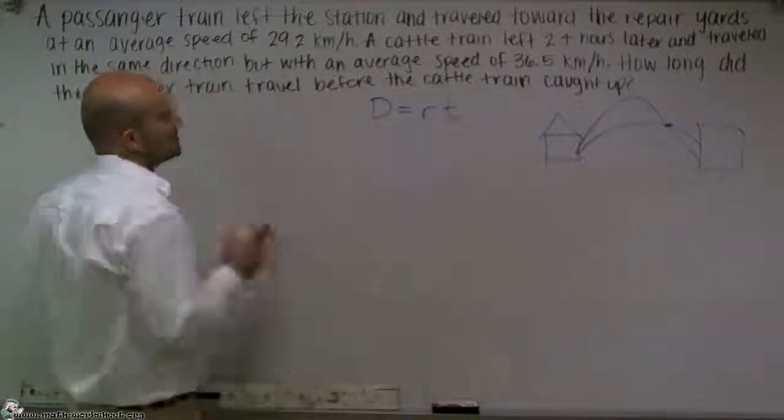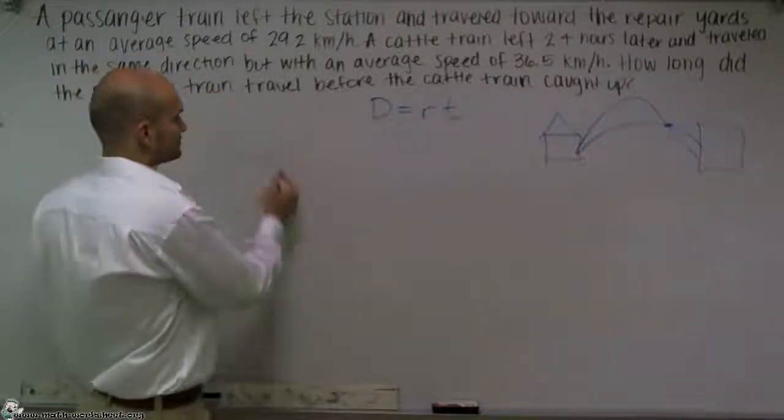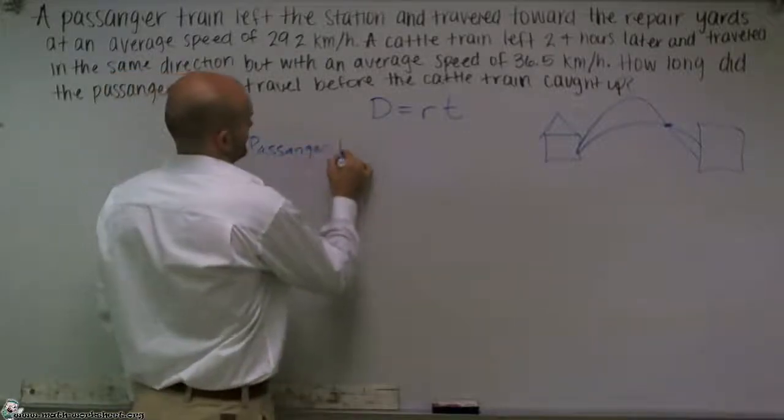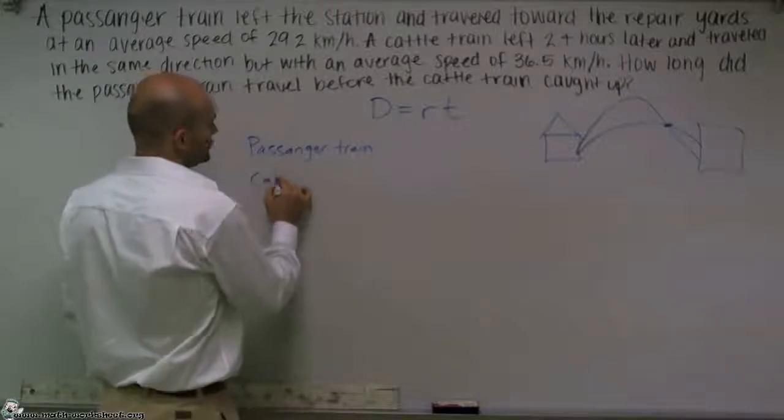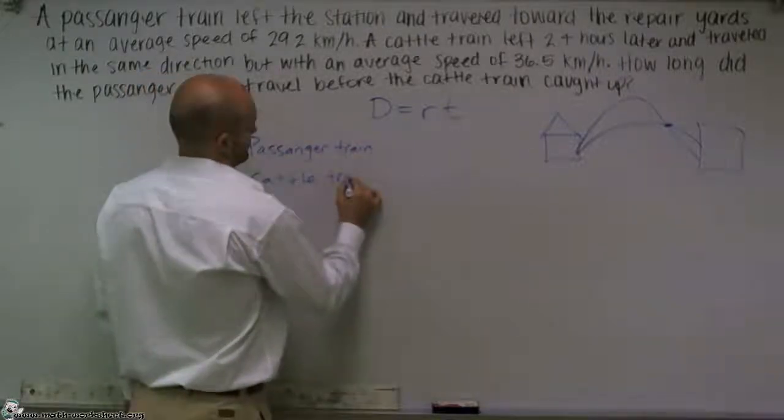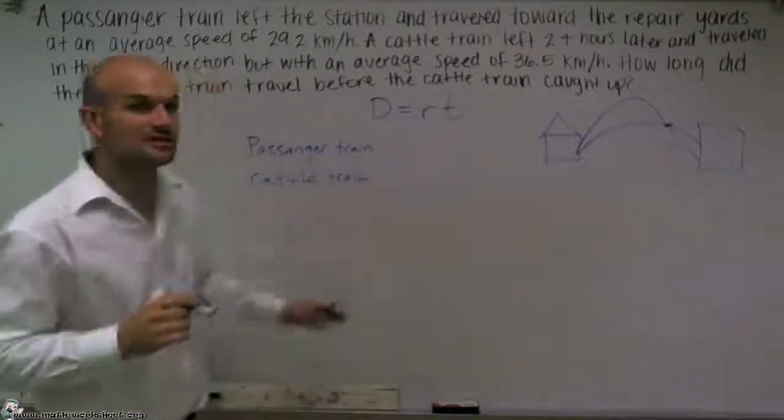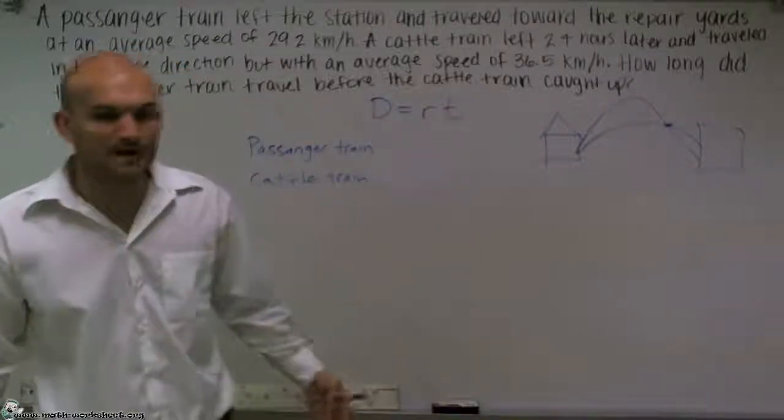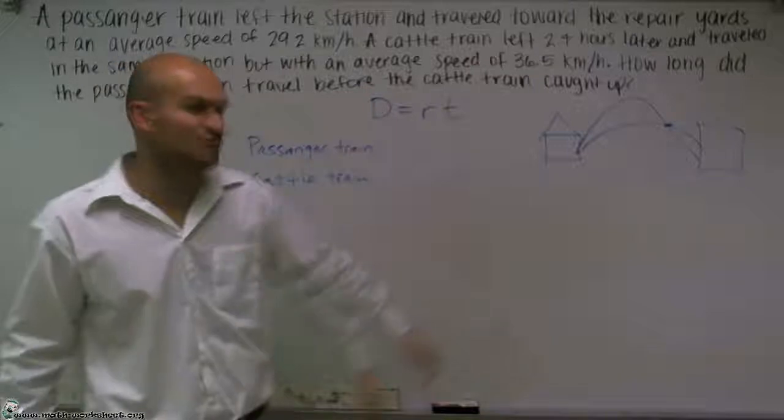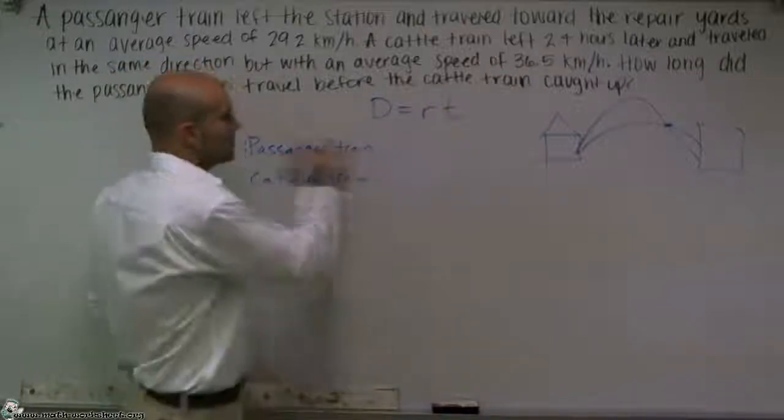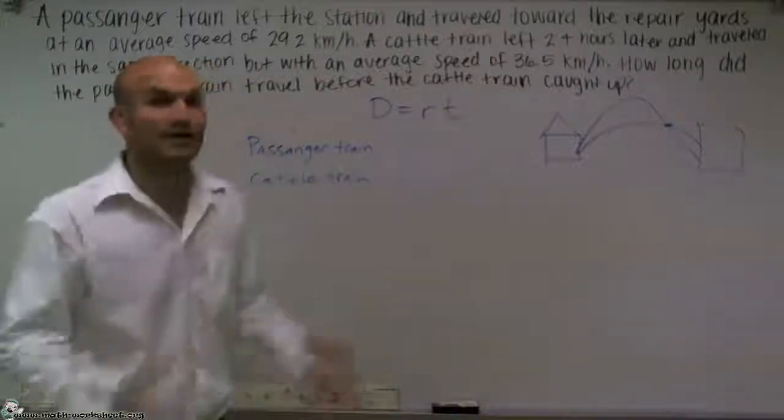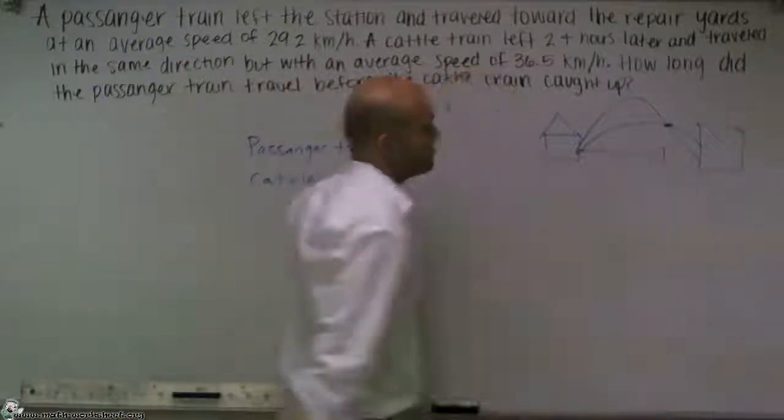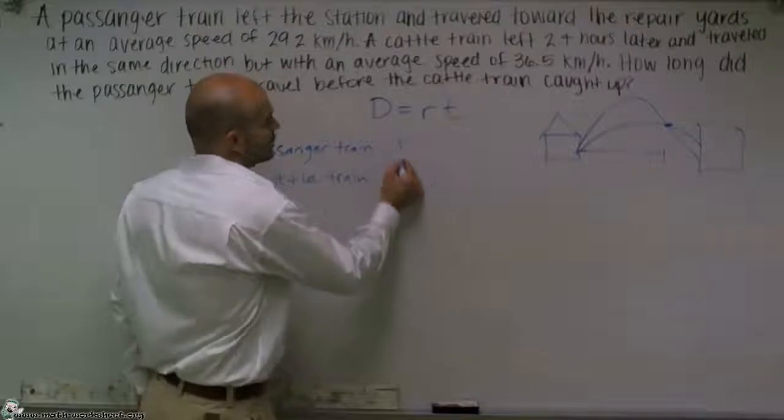So the next thing we're going to do is I'm going to organize all of this. So we know there's a passenger train and we also know there's a cattle train. Now what I'm going to use is I'm going to do the distance equals rate times time to set up my information for both of these. So the distance, we don't know how far they traveled. It doesn't say they traveled so far. We don't know the distance that they traveled when they met up. So we have an unknown of D.